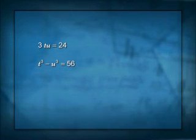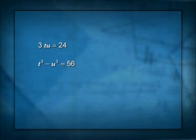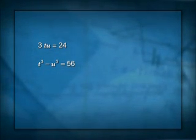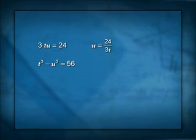Now the way you do that is you solve one equation for one letter and substitute that back into the other. So let's look at that top equation. 3TU is 24. That tells me that U, let's solve that for U,